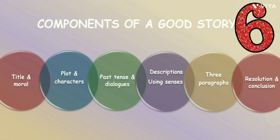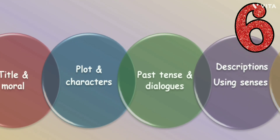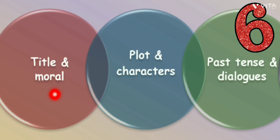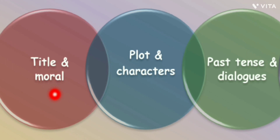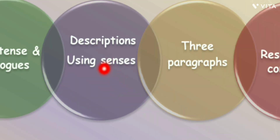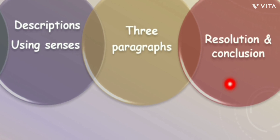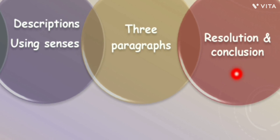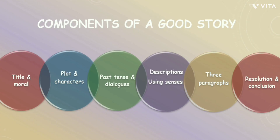There are six components of a good story. These are: title and moral; plot and characters; past tense and dialogues; descriptions using senses; three paragraphs; and resolution and conclusion. Let's understand all these points one by one.